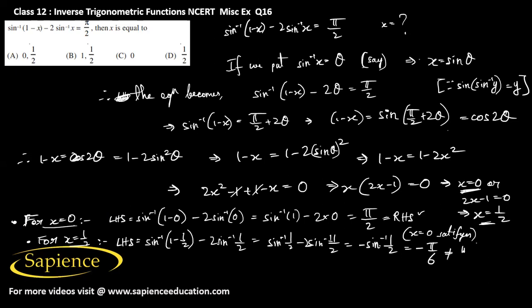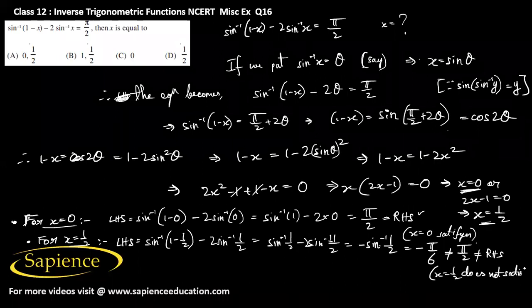Minus pi by 6 is not equal to pi by 2, so the left hand side is not equal to the right hand side. Hence x equal to 1 by 2 does not satisfy the given equation. Therefore x equal to 0 is the only solution, so option C is the correct answer.